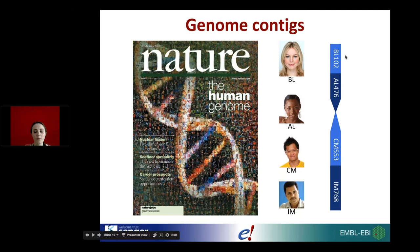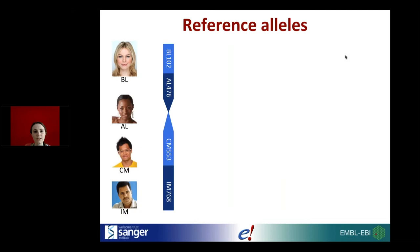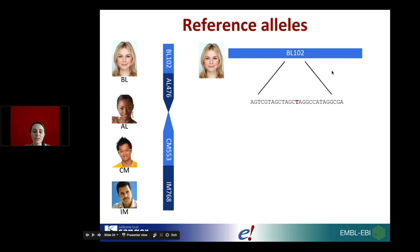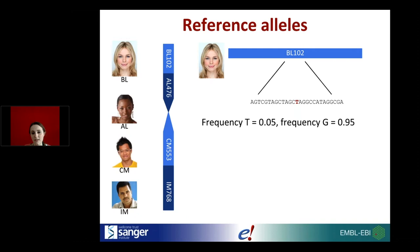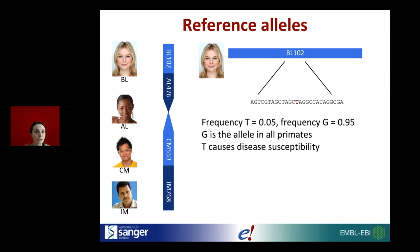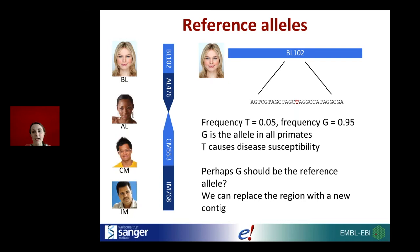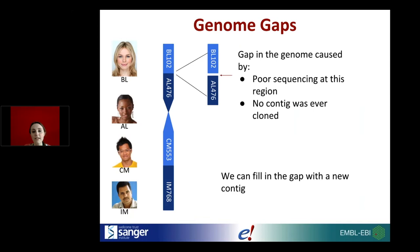One thing that can go wrong is reference alleles. The individual whose sequence we obtained might have a particular allele at a locus that turns out to be very infrequent in the population, while another allele is more frequent and might be the ancestral allele found in all primates. If the reference allele causes disease susceptibility, the question arises: should the more common allele be the reference? In that case we might replace a contig or just a short section so that the reference has the preferred allele.